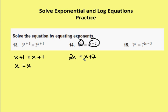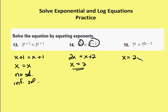So I have 2x is equal to x plus 2. I subtract x from both sides and I get x is equal to 2. And then finally, I have 7 to the x is equal to 7 to the 2x minus 3. Again, I equate the exponents, so x is equal to 2x minus 3. I add 3 to both sides and subtract x from both sides, and I get x is equal to 3.